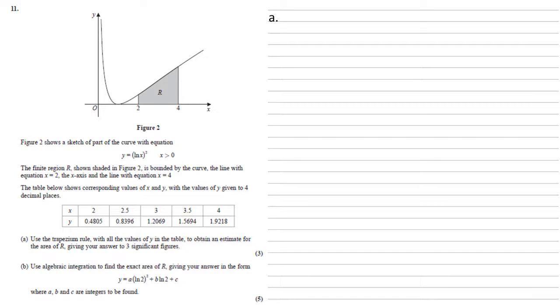For part A, we need to use a trapezium rule with all the values of y in the table to obtain an estimate of the area of R and give our answer to three significant figures.